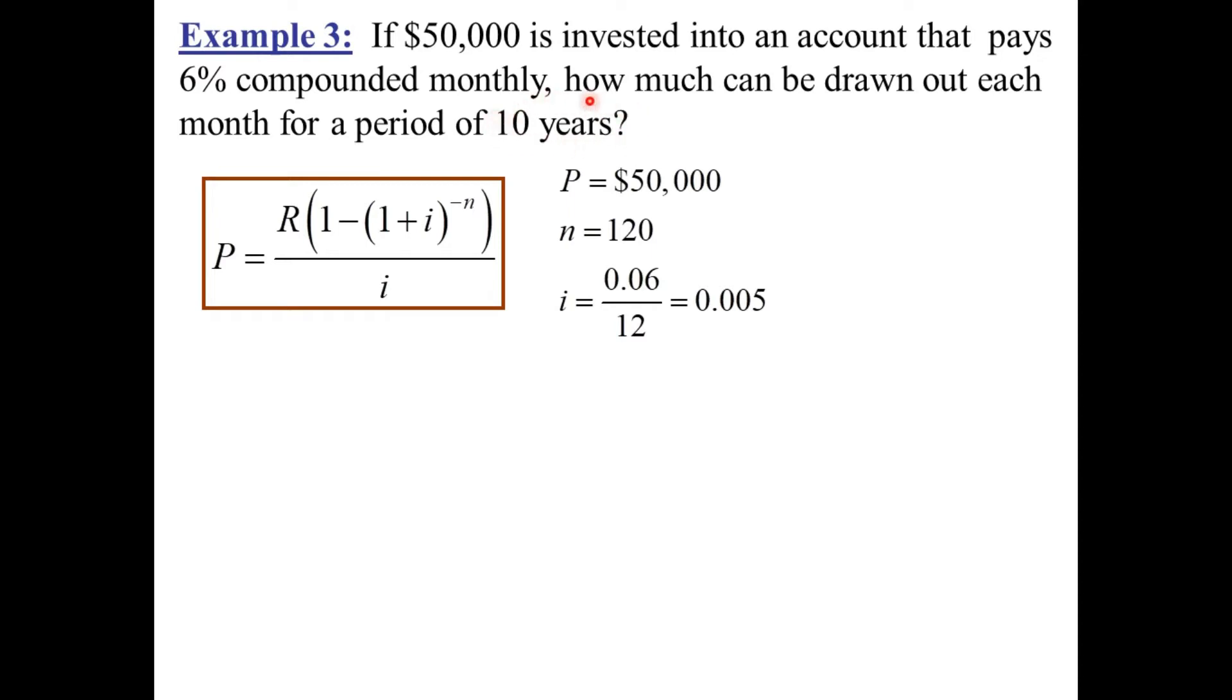Where are we getting 120? It's 10 years and it's every month for 10 years. The I value, 0.06 divided by 12, because it's 6% compounded monthly, hence 0.06 divided by 12, is this according to the calculator. Plug them into the formula.